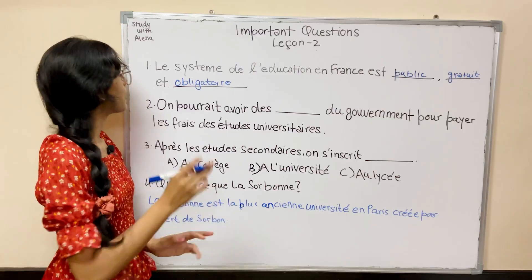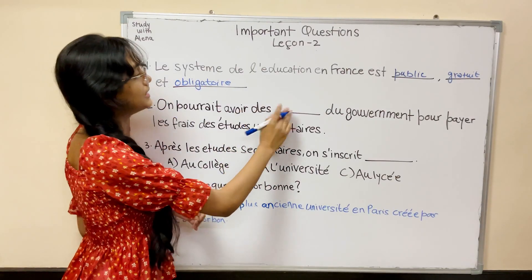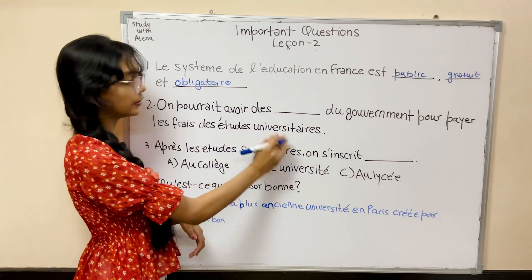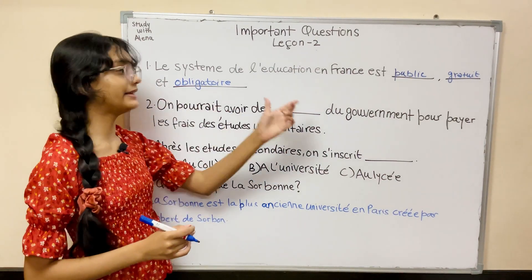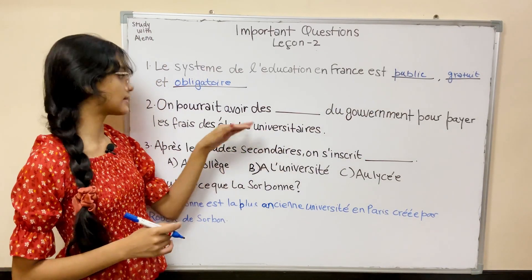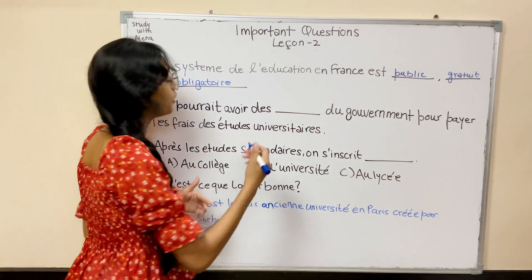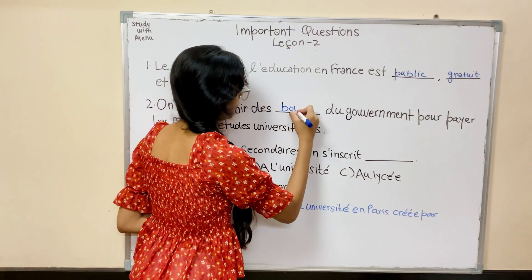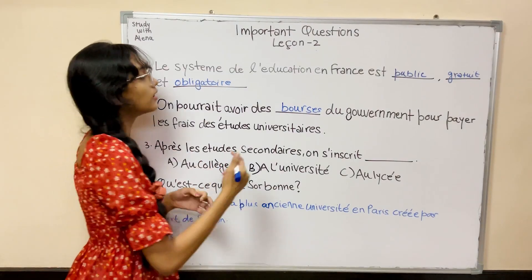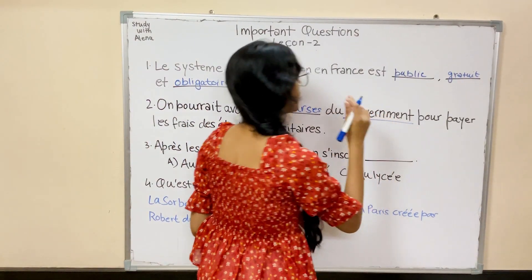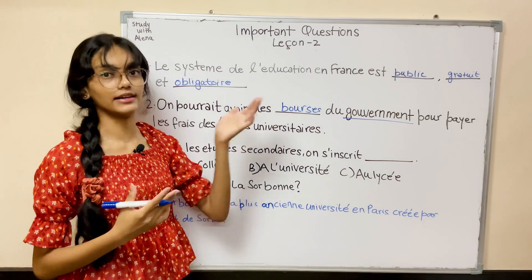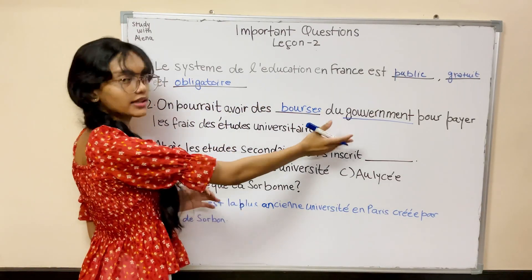The next question is: On pourrait avoir le dais du gouvernement pour payer le frais des études universitaires. We can avail a scholarship from the government to pay for our university fees — bourses du gouvernement. This question can come in another form where 'gouvernement' can be given as a blank, asking from where we can get these scholarships. So you have to write gouvernement.